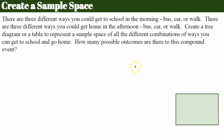Now I want you to create a sample space showing three different ways to get to school in the morning — by bus, by car, or by walking — and three different ways to get home in the afternoon: bus, car, or walk. Remember, you could ride the bus to school and take the car home, or walk to school and take the bus home. There are many different possible outcomes. Create a tree diagram or a table to represent this sample space and find how many different combinations exist, and how many possible outcomes there are for this compound event. Go ahead and create your sample space. Hit play when you're ready.